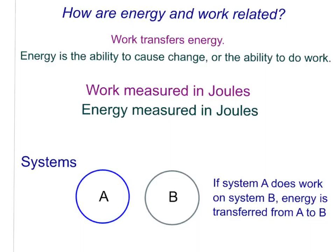Another useful way of thinking about energy and work is through systems. A system essentially is anything you can imagine a boundary around. I've made up two systems — system A and system B. System A could be anything: it could be the baseball, or a group of objects like the entire solar system. The important thing is that it has a boundary around it.